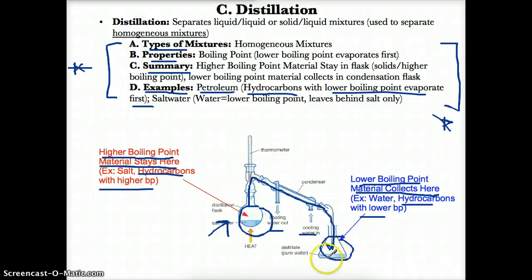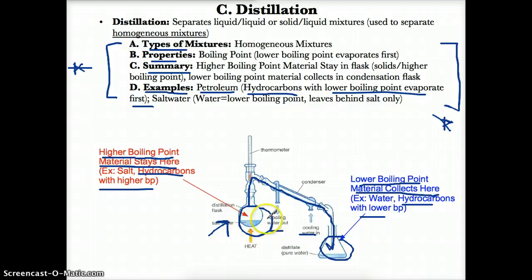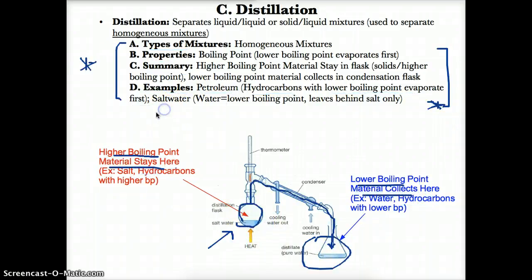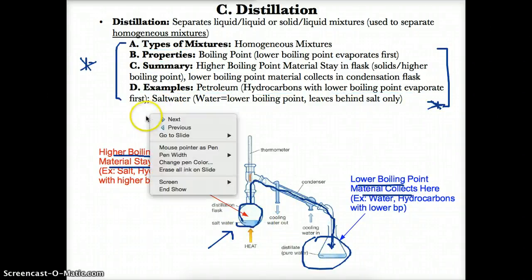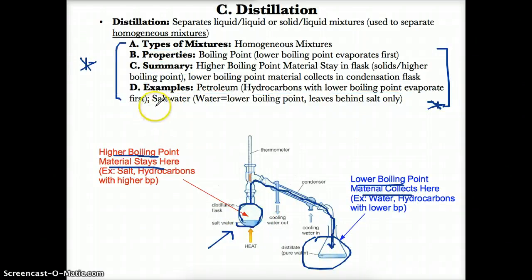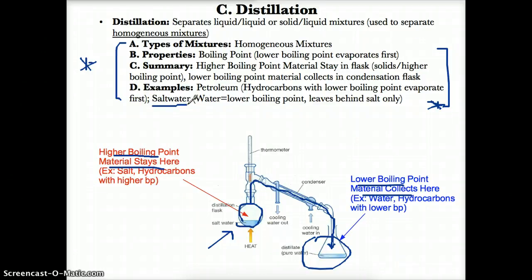The hydrocarbons with the higher boiling point will stay in the original flask. Another example of a homogeneous mixture that can be separated by distillation is salt water. Salt water is obviously an aqueous solution of sodium chloride.